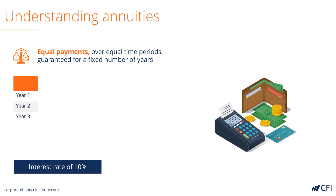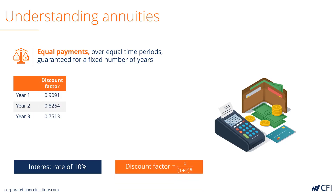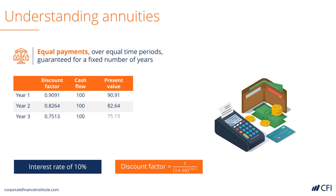Remember the formula is 1 divided by (1 + R) all to the power of n. We can then easily calculate the present value of the annuity by first multiplying the future values by their discount factors, and then by adding all the present values together. So the present value of this annuity is $248.69.